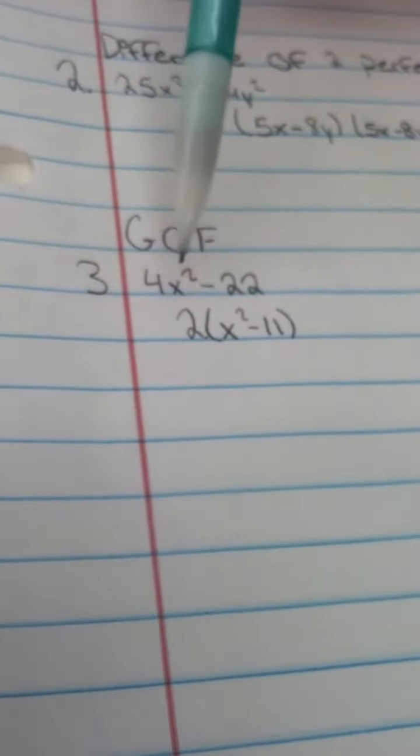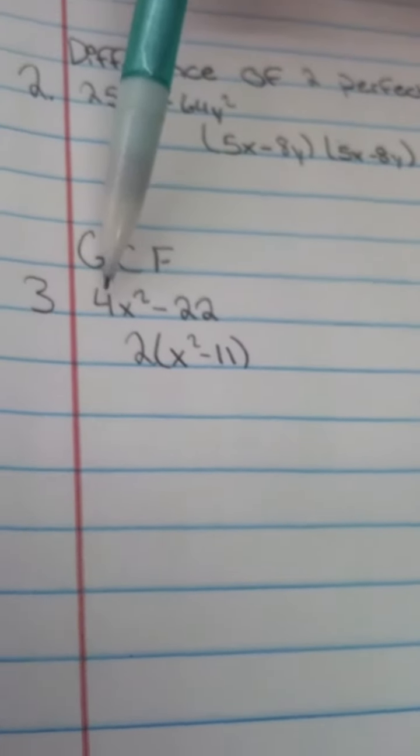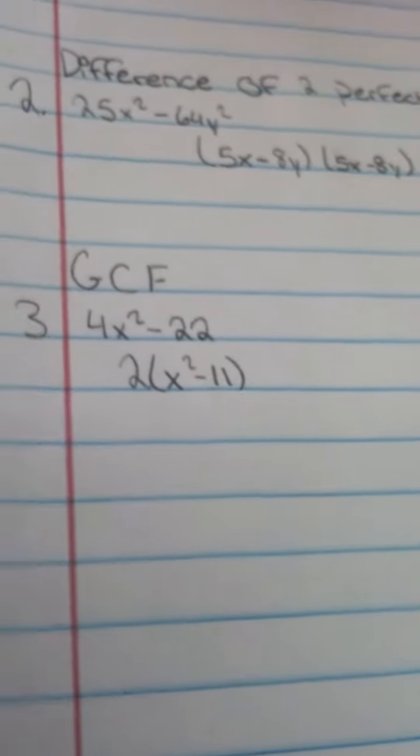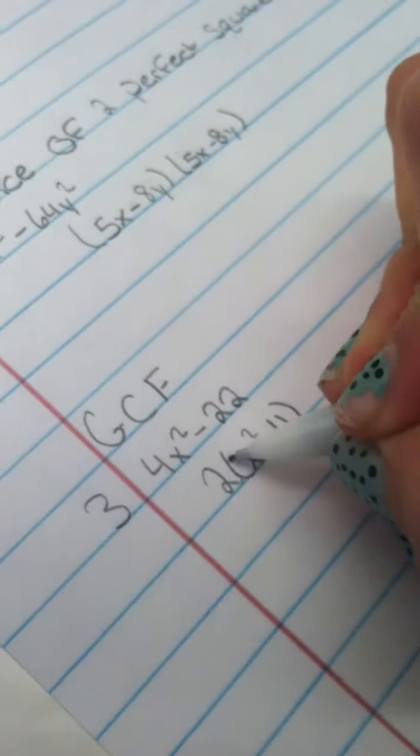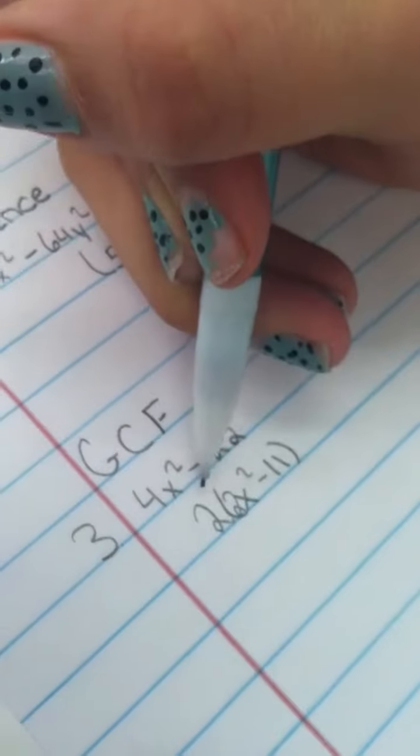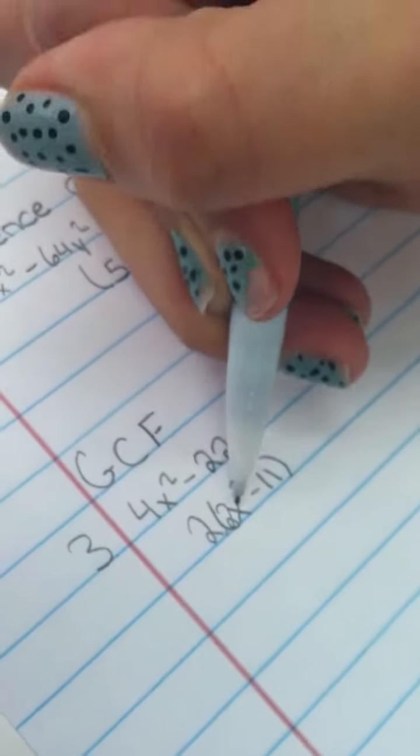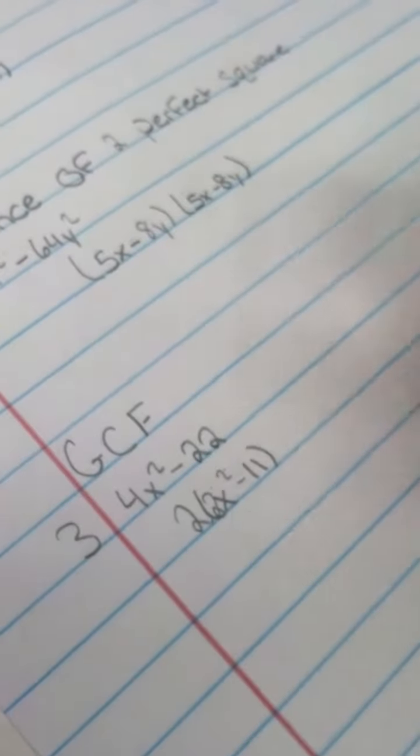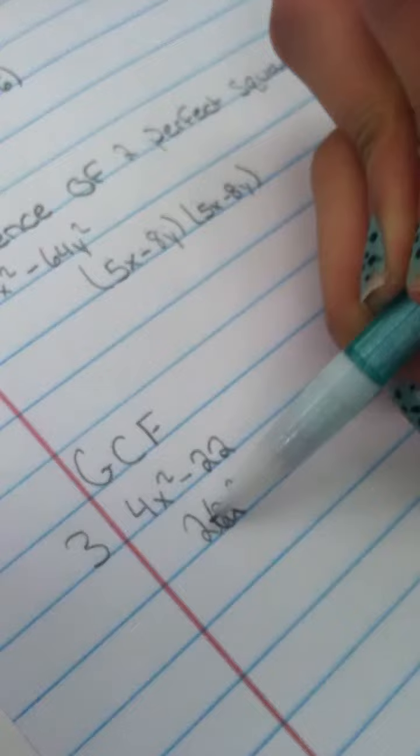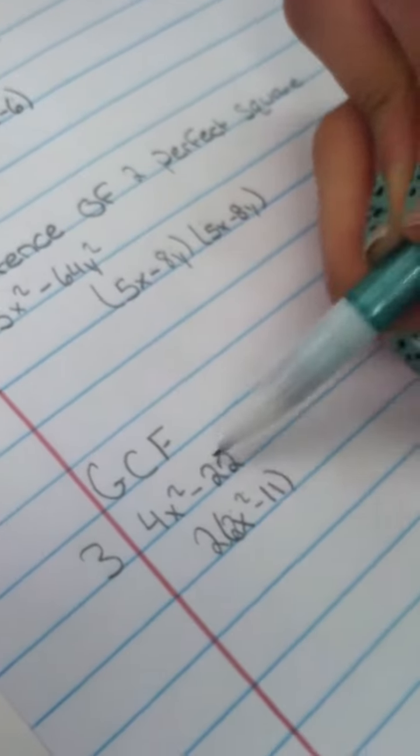And so for the greatest common factor, you would just factor out which one they both have in common. So it would be 2. I think I messed up. Yeah, I messed up. So, for this one, it would be 2 times 2x squared, which equal 4x squared, and then 2 times 11, which will equal 22.